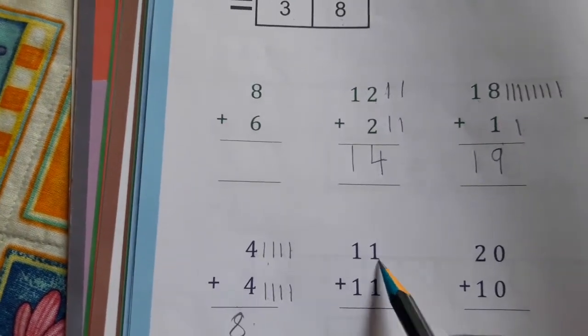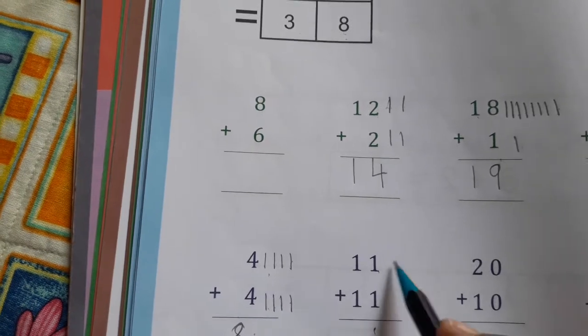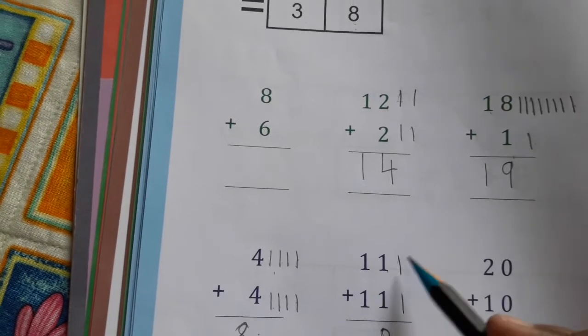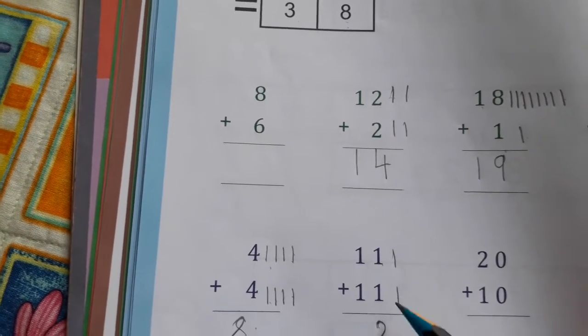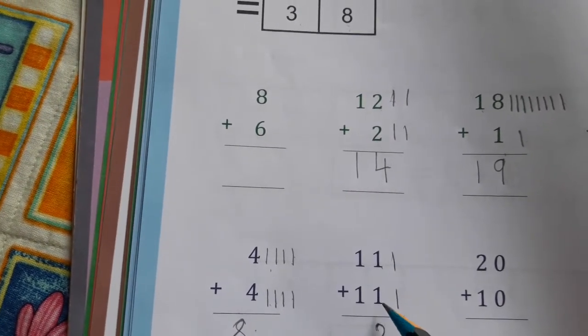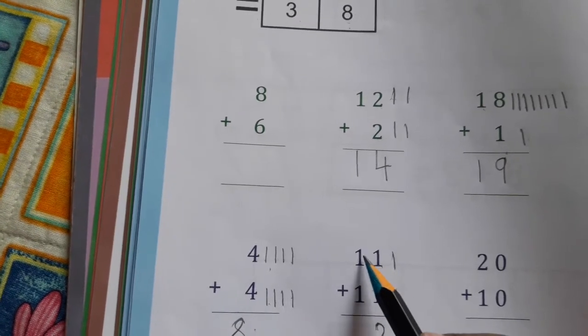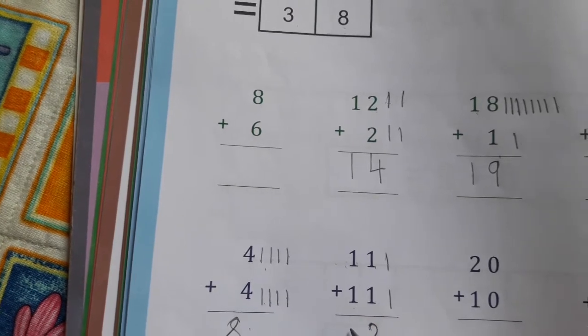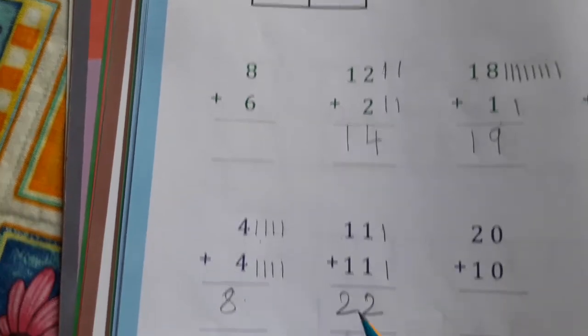1 plus 1 equals 2. 1 plus 2, right here 2. First we have to add the numbers at the back, then the numbers at tens side. 1 plus 1 equals 2, so this became 22.